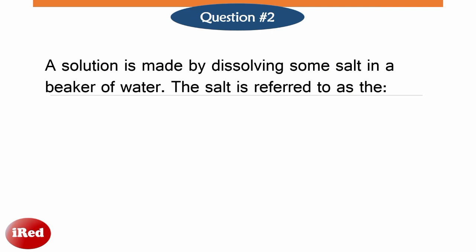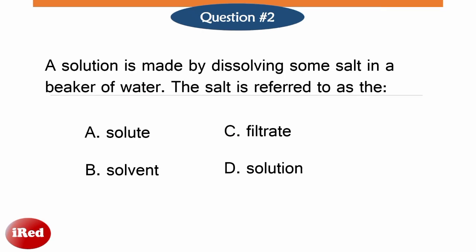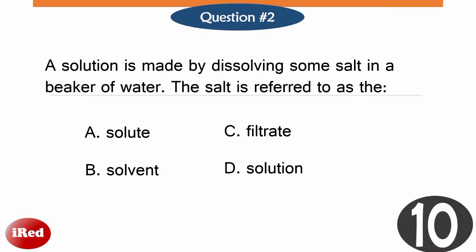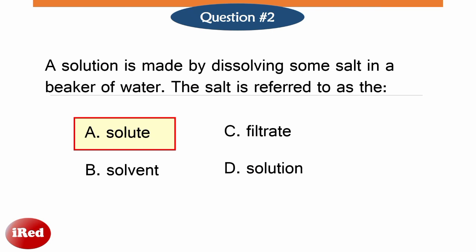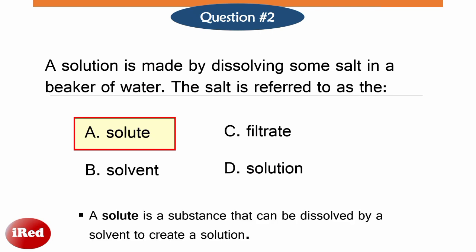Number 2. A solution is made by dissolving some salt in a beaker of water. The salt is referred to as: A solute, B solvent, C filtrate, or D solution. A solute is a substance that can be dissolved by a solvent to create a solution. In salt solution, the salt is the solute and water is the solvent.